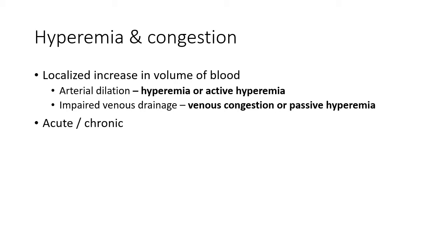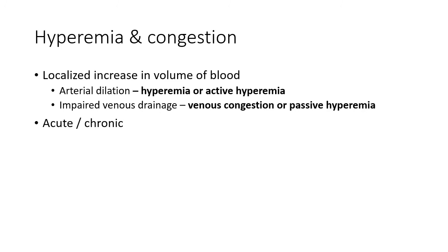In simple terms, in active hyperemia the increased volume of blood is due to increased input via the inlet, and in venous congestion the increased volume of blood is due to a blocked outlet. Increase in volume of blood due to arterial dilation is called hyperemia or active hyperemia; due to impaired venous drainage it is called venous congestion or passive hyperemia. Both can be acute or chronic.